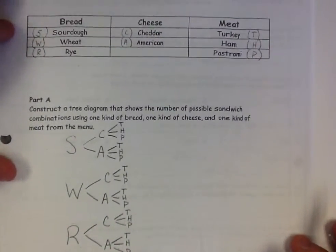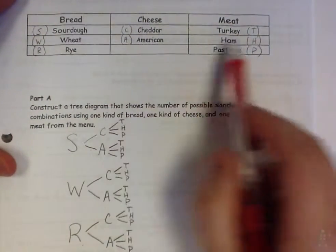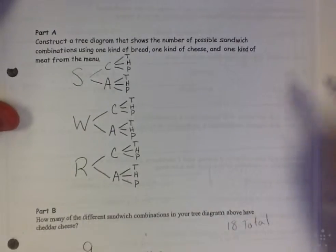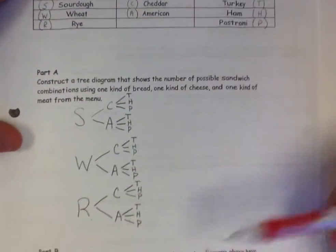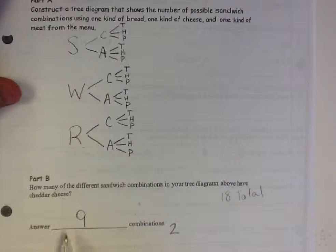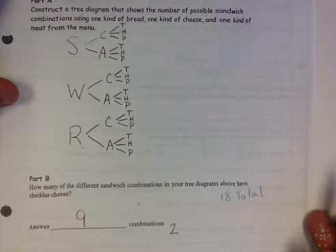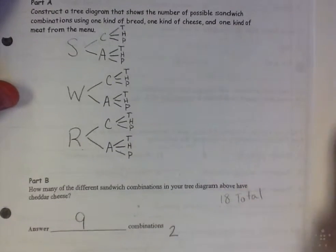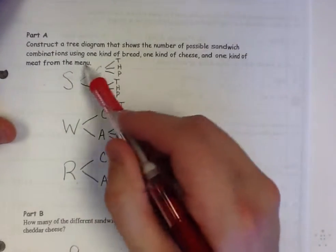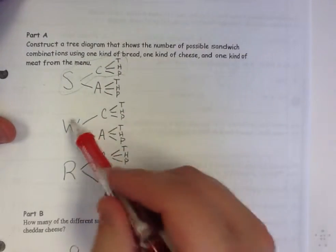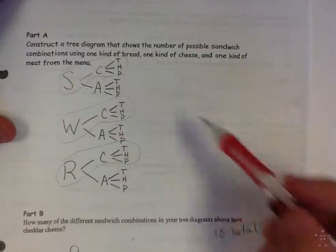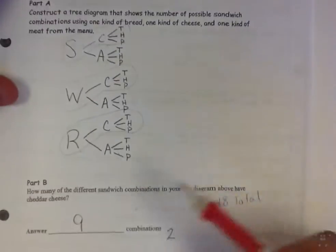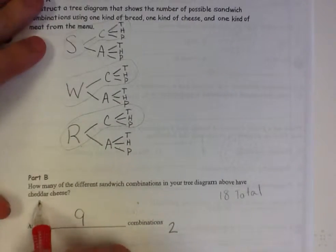Here is another example of a tree diagram. We have bread with a cheese and a meat. Using single or two letters to represent these options and labeling them makes it much easier to draw your tree diagram. How many combinations? There are nine different combinations. This asks how many sandwich combinations in your tree diagram have cheddar cheese. In order to have cheddar cheese, it would be any of these sandwiches — the other sandwiches have American. There are one, two, three, four, five, six, seven, eight, nine — that's why we have nine combinations that have cheddar cheese.